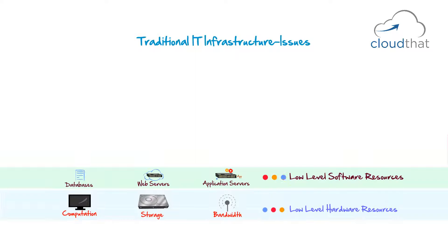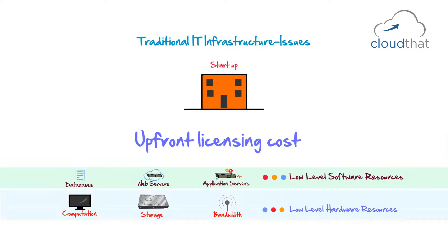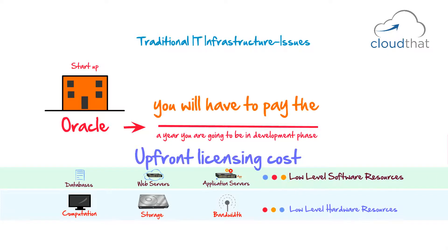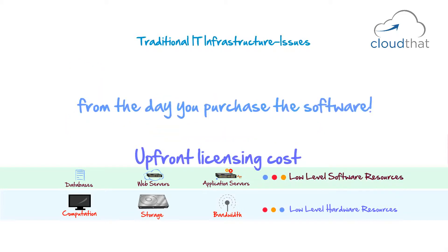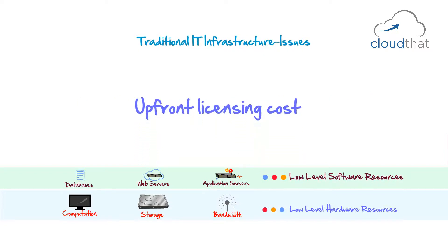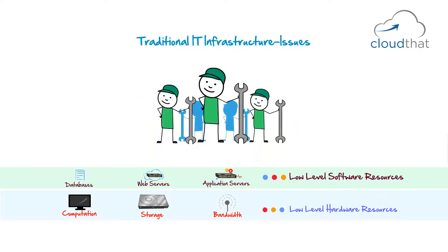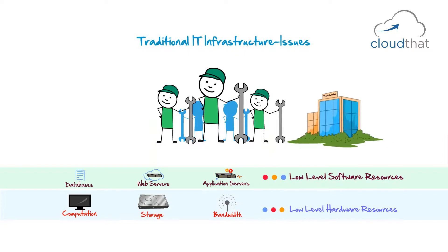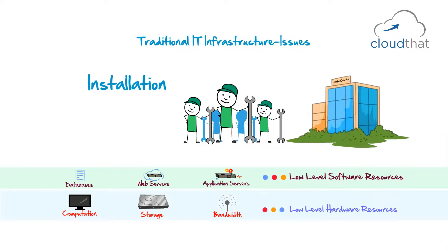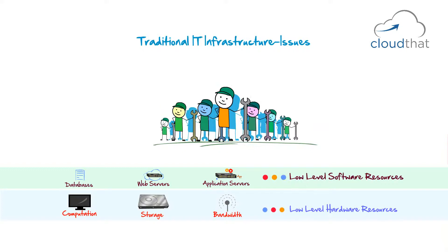At the low level software resources layer, you have upfront licensing cost as an issue. Imagine you are a startup wanting to use Oracle database — you know you will be in development phase for a year, but with Oracle you will have to pay the entire licensing fees from the day you purchase the software. Similarly, for many applications on the market, you will have to pay upfront licensing costs. You will also need a good software engineering team, because simple tasks like installations, patching, and updating can get cumbersome as your company grows, requiring an experienced dedicated team.